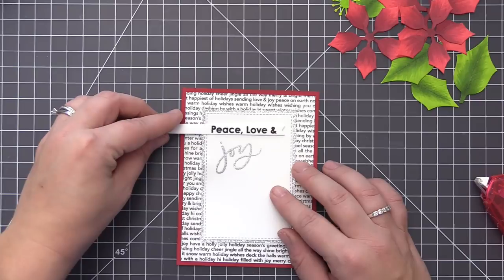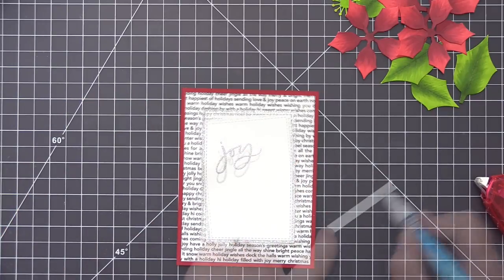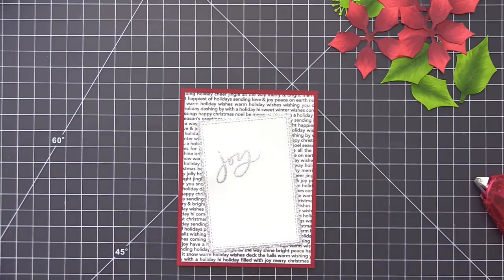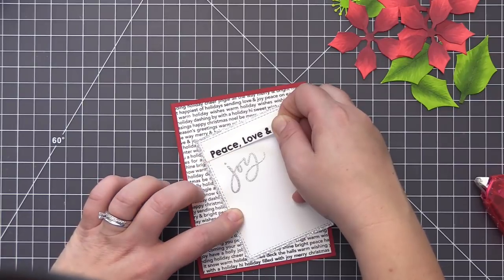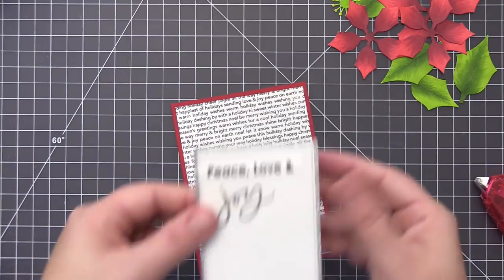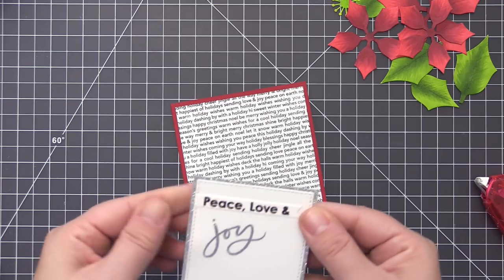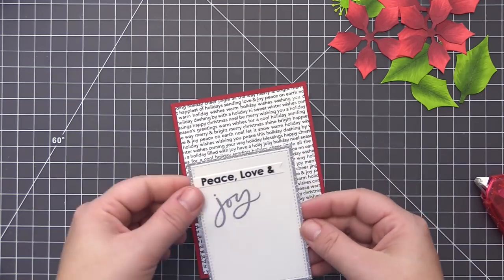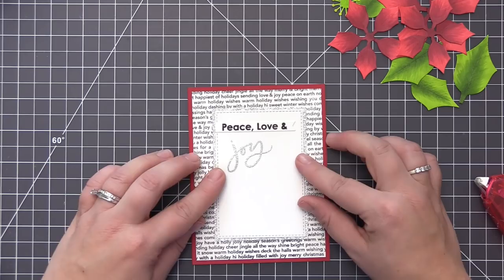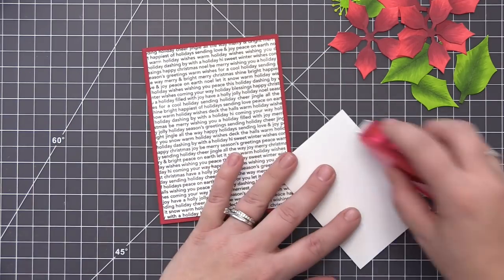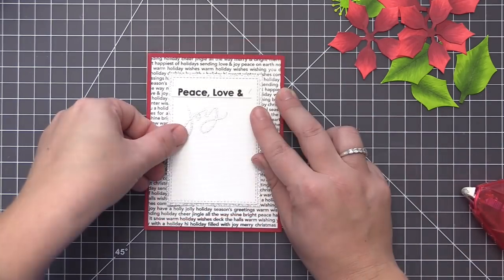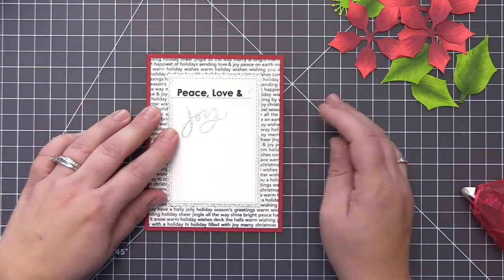I find the easiest way to adhere a little sentiment strip like this is with some liquid glue so I just use my glue pen, added the adhesive on the back and then position that directly above our joy sentiment. I'm now going to adhere this panel to our card base and I'm going to use the same adhesive. I'm not going to add any dimension to this at all and I'm just going to kind of position this towards the center and adhere that directly on top.